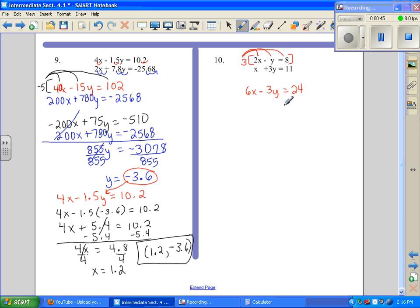We're going to bring down the second equation just like it is. Add down, we get 7x. These cancel just like I hoped. Divide both sides by 7. x equals 5.